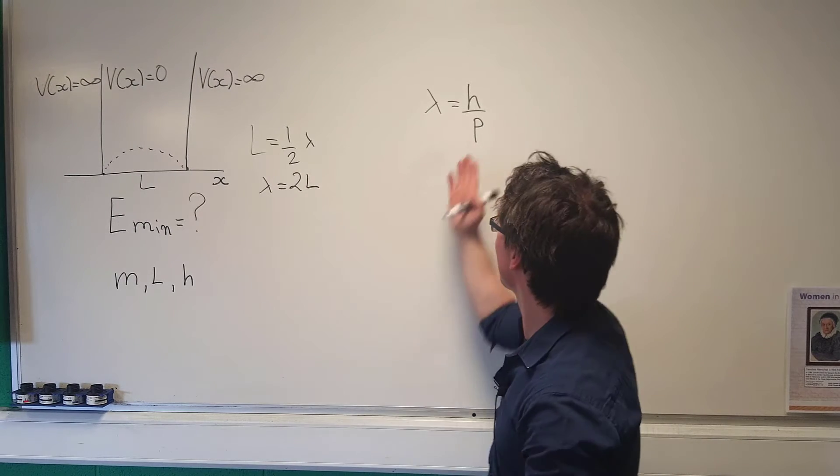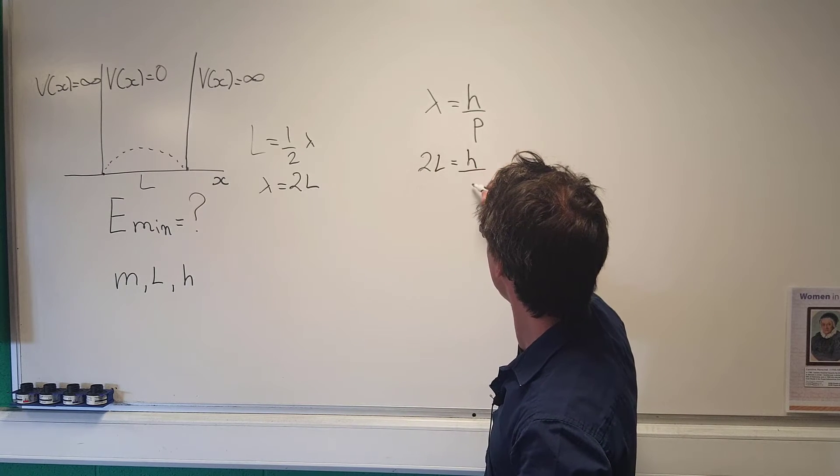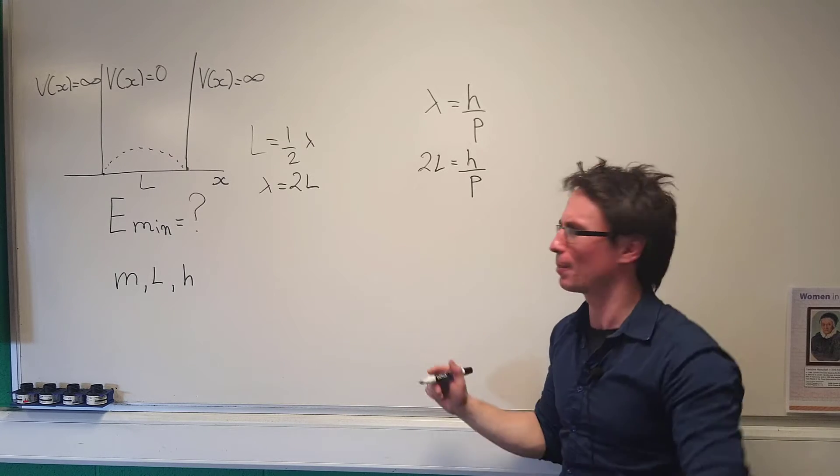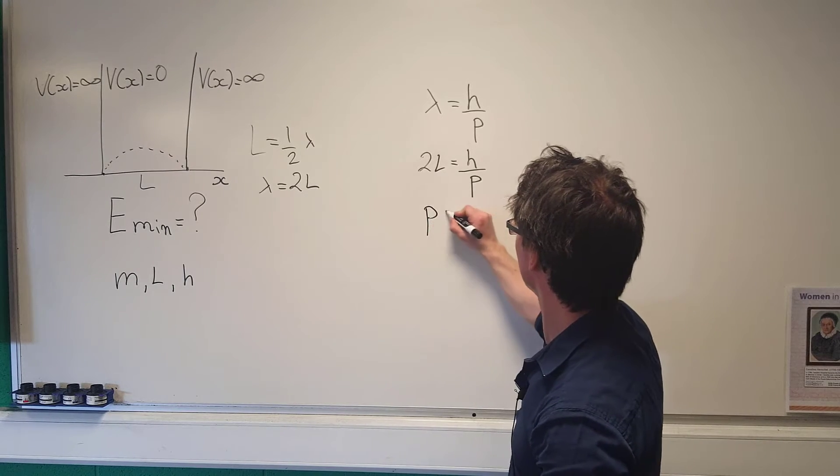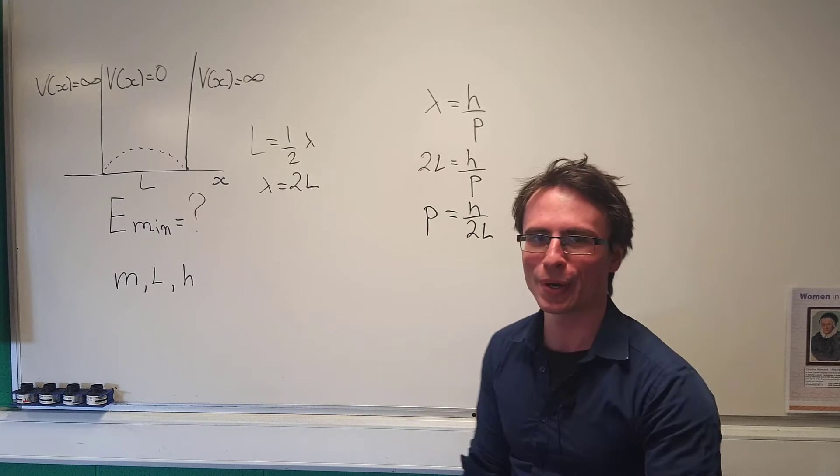Let's plug this into this equation. We're going to find that 2L will be equal to h over p. We can also rearrange this for the momentum, and what we're going to get is that p is equal to h over 2L.